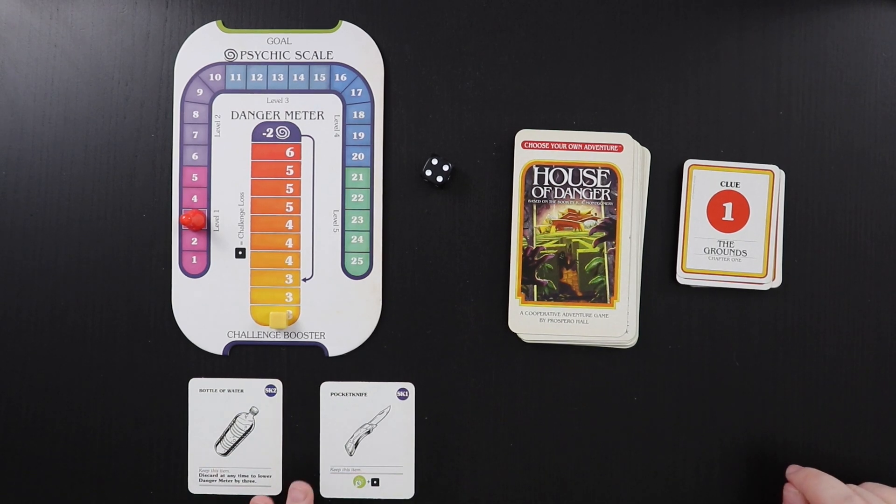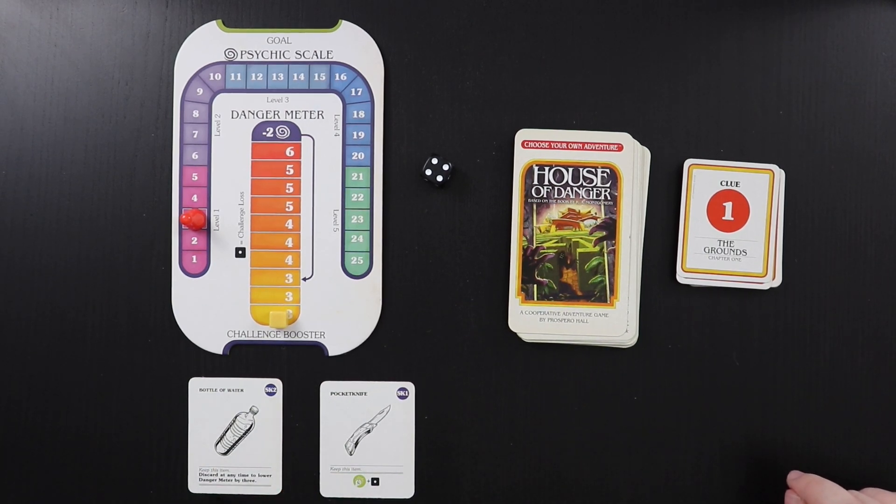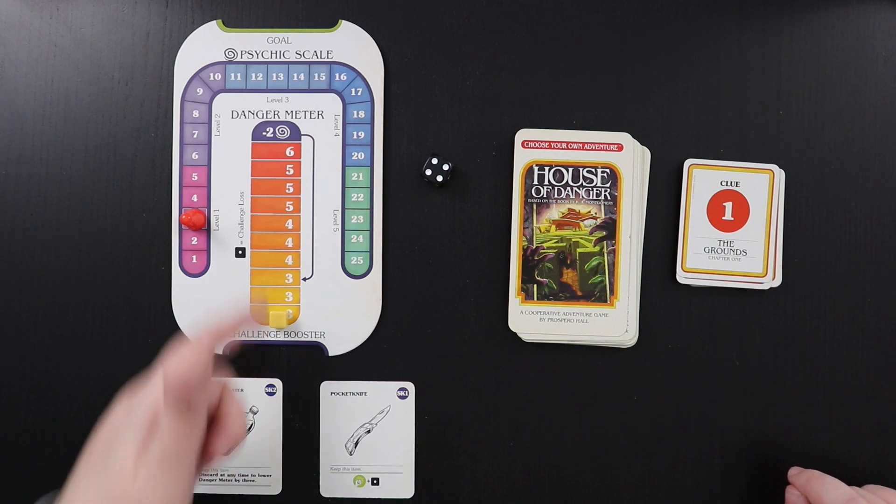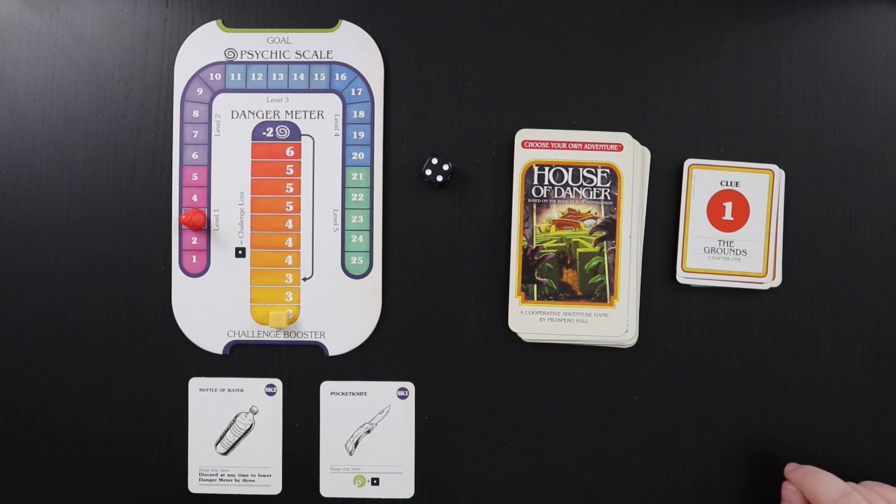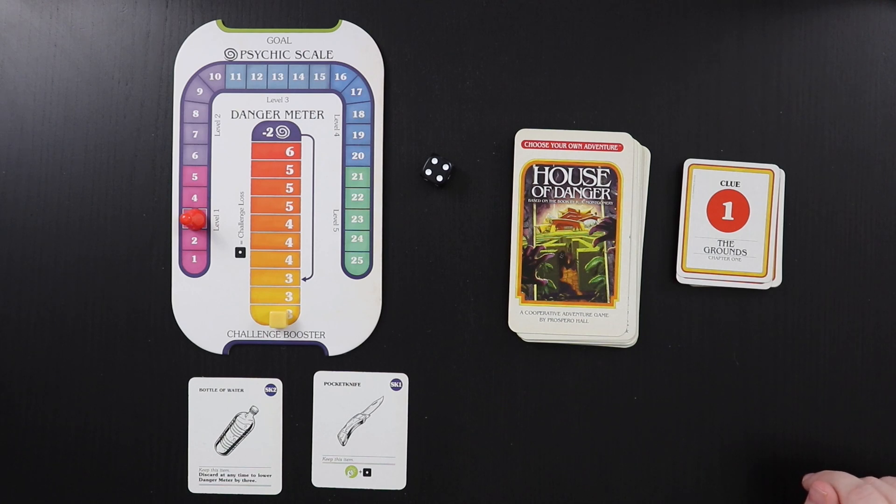The other good news is that you do have little items. So these are your starter kits that you pick up, but like this bottle of water, you can discard it at any time to lower the danger meter by three. So if you're getting up high and you really want to pass a challenge, you can make that work. Or this pocket knife gives you a plus one to strength tests. And there are a couple of different types of tests in the game that you may have to pass, and you can get little items that will help you pass different kinds.